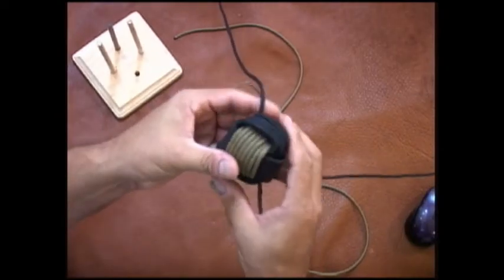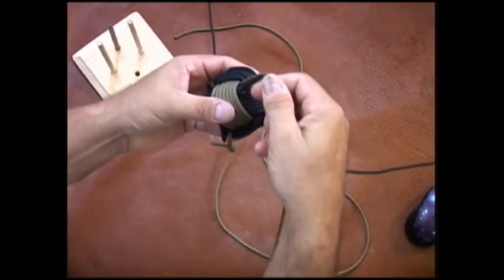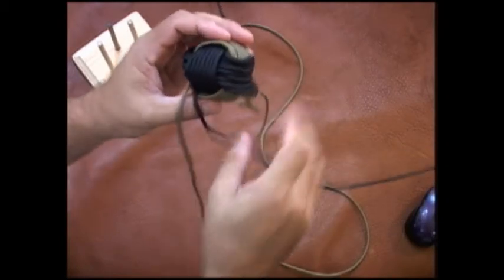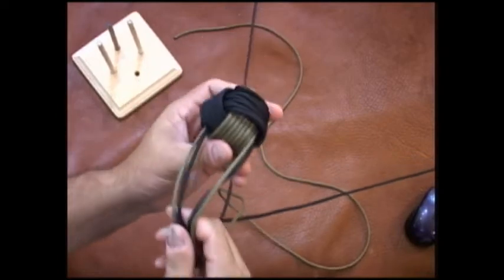And then now what we're going to do is finish on exactly the same side as this one. So what we have is a roughed in monkey fist, and we have two cords that come out opposite of each other, like this.